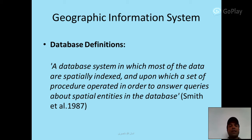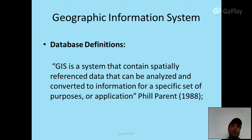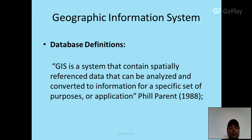Geographic Information System — database definitions: a database system in which most of the data are spatially indexed, and upon which a set of procedures are operated in order to answer queries about spatial entities in the database. GIS is a system that contains spatially referenced data that can be analyzed and converted to information for a specific set of purposes or applications.